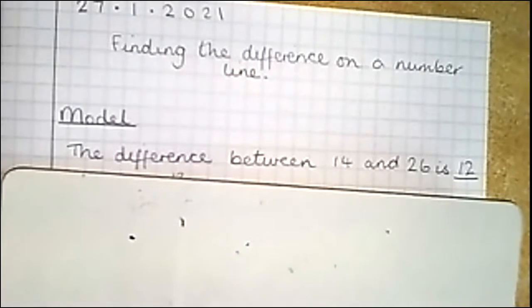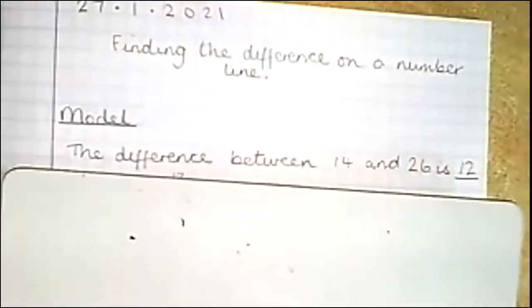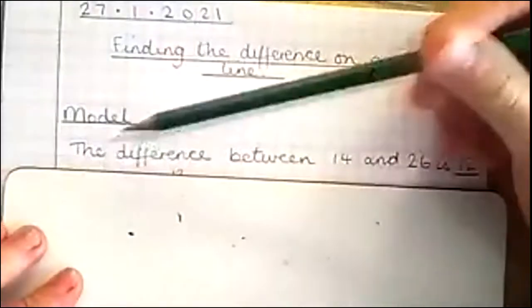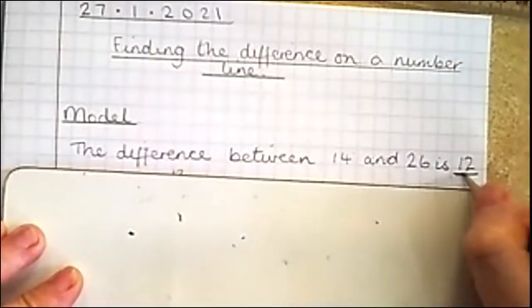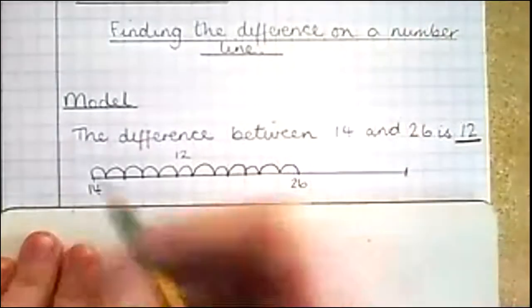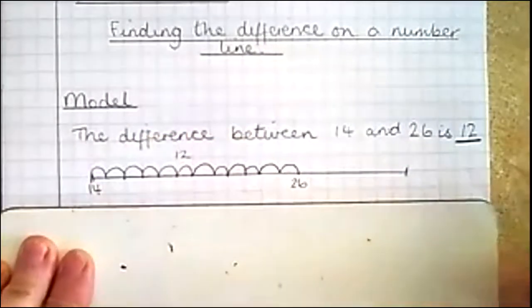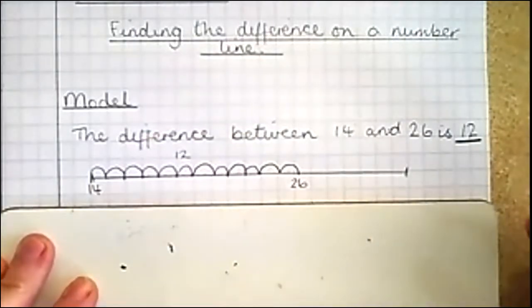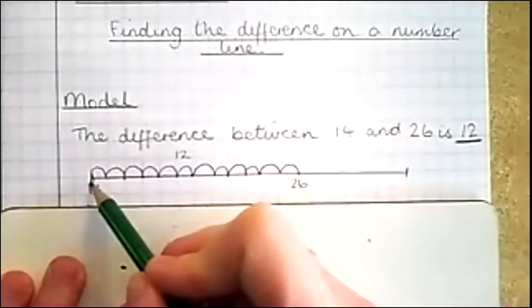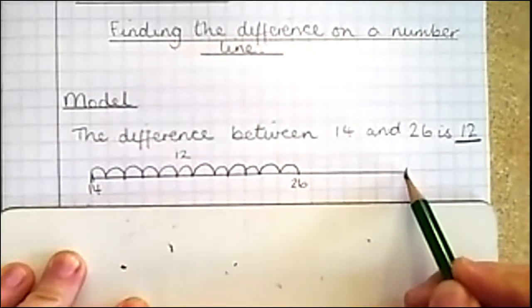Okay, welcome back. Hopefully you can see this nice and clearly. So I have got my date and my title. One thing I have forgotten to do, Mrs. Wilde, is underline them just like I would do if I was in school. Finding the difference on a number line. Now, model. I've now got the difference between 14 and 26. I've already answered this, but I'm going to show you. I want you to put a line there.